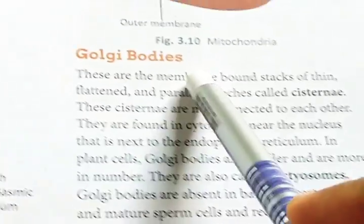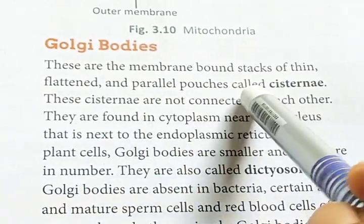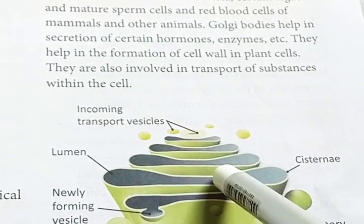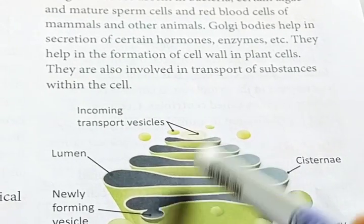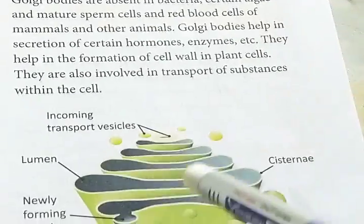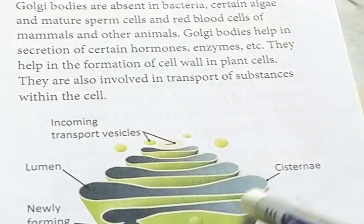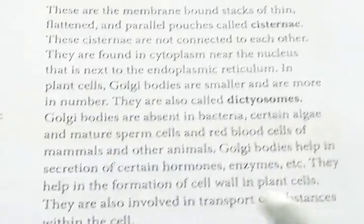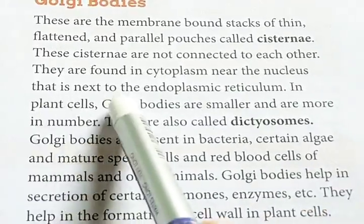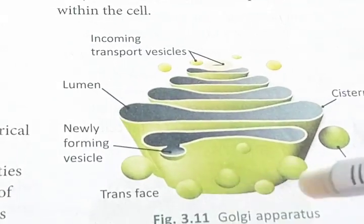Next, Golgi bodies. These are membrane-bound stacks of thin, flattened and parallel pouches called cisternae. Look at the figure — there are pouch-like structures and each pouch is different from the other; they are not interconnected. There is a cavity known as the lumen and each pouch is also known as cisternae. They are found in the cytoplasm near the nucleus and next to the endoplasmic reticulum.